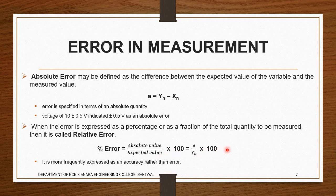That gives us the percentage error. One statement says it is more frequently expressed as accuracy rather than error. We casually say how much an instrument is accurate rather than defining its error. Whatever instrument you see — such as in medical screenings — how accurate the reading is and how accurate the test results are is what we define. Whenever we are taking an instrument, we have to focus more on accuracy than on error.